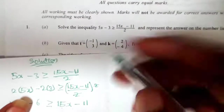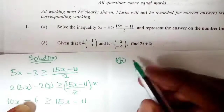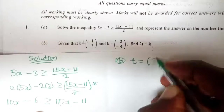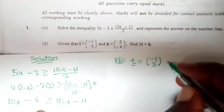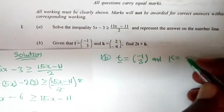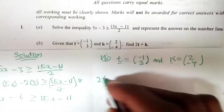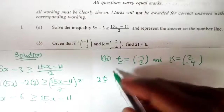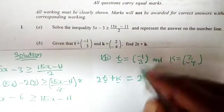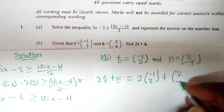Now for question 1b, we are given vectors: t equals negative 1, 3 and k equals 2, negative 4. We are supposed to find 2t plus k.